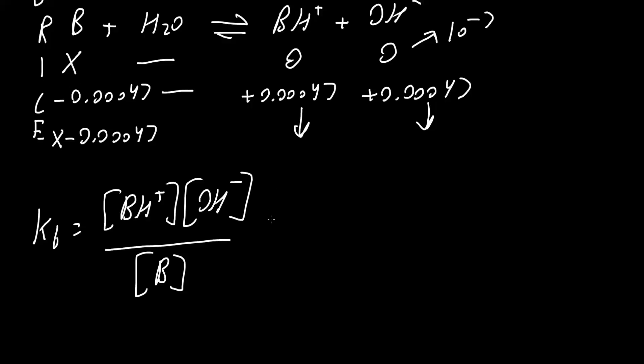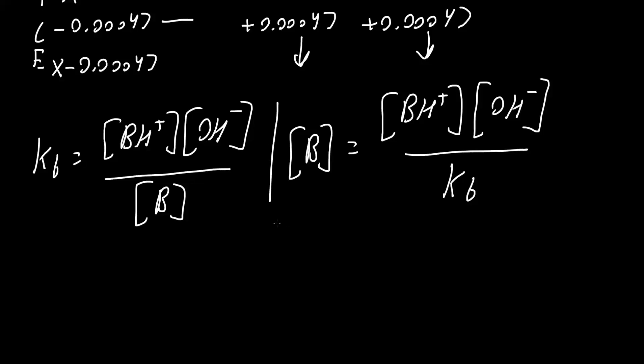We can simply rearrange what we have. So we could say that B is equal to, and so now we swap our numbers. So B is equal to X minus 0.00047.